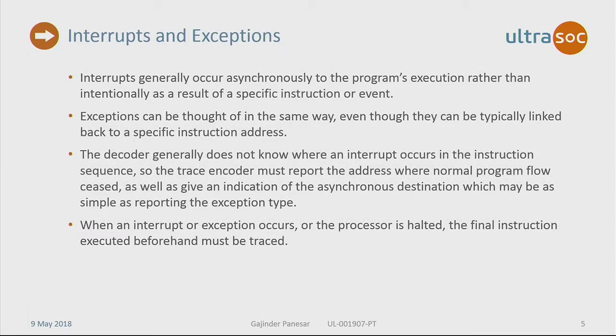Interrupts can be handled similarly — they usually happen asynchronously to the program's execution, usually because of some external event. Exceptions can be treated similarly too, but they can usually be linked back to a specific instruction, meaning something in the program caused that to happen. The decoder takes the compressed branch trace to reconstruct the program flow. It doesn't know when the interrupt occurs, so we need to send it enough information to reconstitute the program flow.